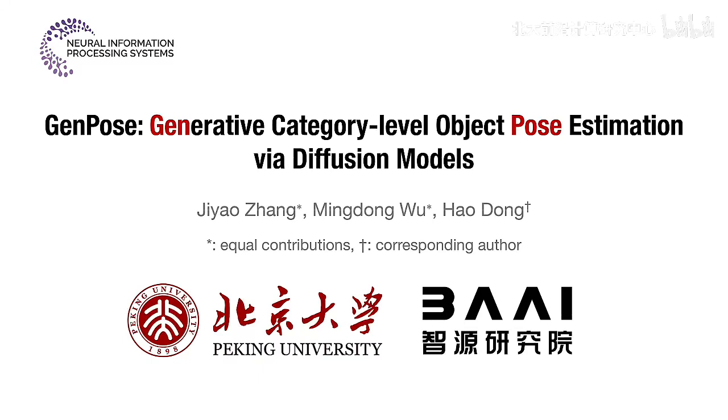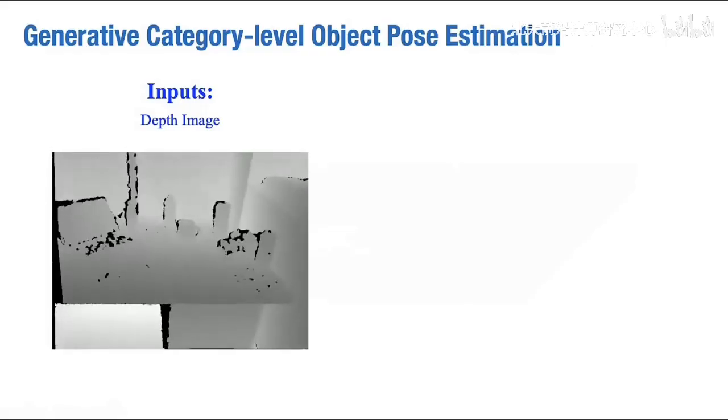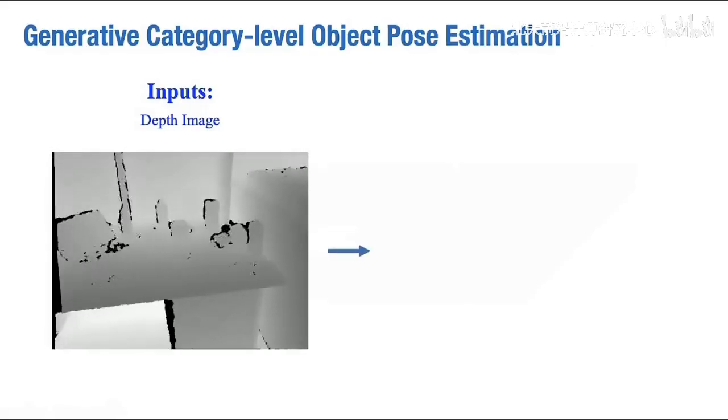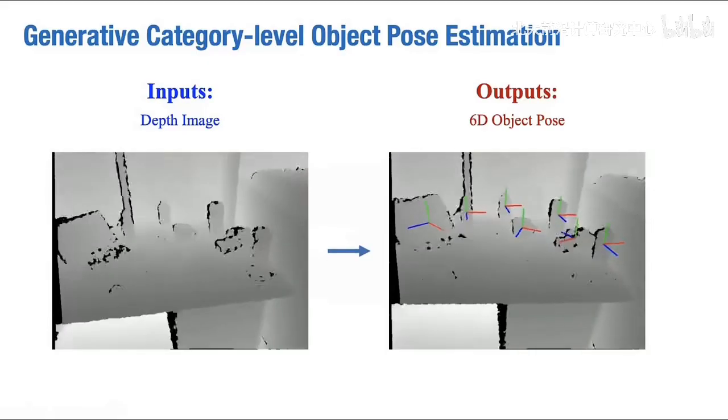We introduce generative category level object pose estimation via diffusion models. In this work, we aim at 6D category level object pose estimation. The 6D poses involve 3D rotation and 3D translation. Given a single noisy depth image,